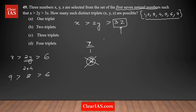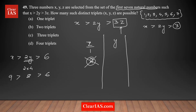Now fixing z = 1, I'll find the possible values of y. With z = 1, 3z = 3, so 2y must be greater than 3, meaning the minimum value of y is 2. Let's start with y = 2: the condition becomes x greater than 2 times 2, which is 4.